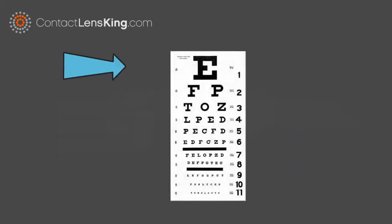For the Snellen eye chart, a person reads out loud the letters from each line.